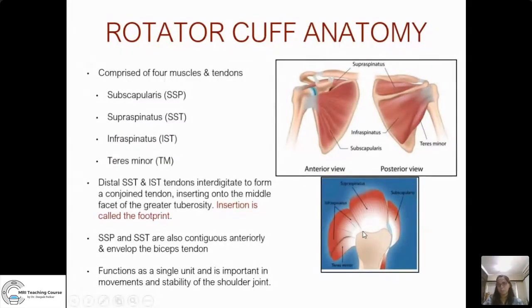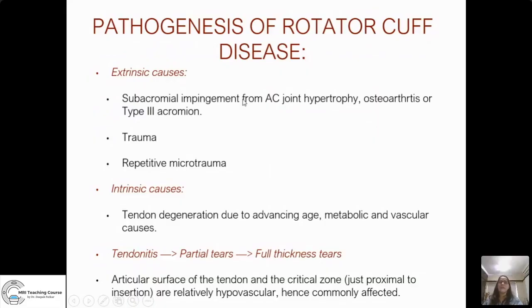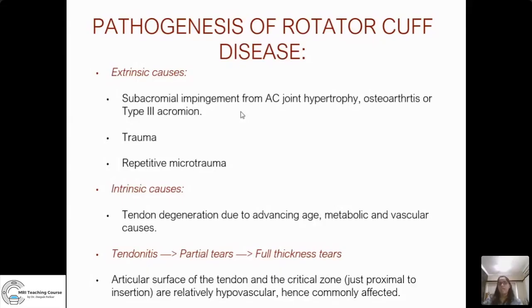This interdigitation is important because when evaluating rotator cuff pathologies and tears, extension from one tendon to another often happens because of it. Functionally, the rotator cuff is considered as one unit helping in the movements and stability of the shoulder joint. Broadly, shoulder pathology is divided into rotator cuff and non-rotator cuff disorders. Rotator cuff pathologies include tendinitis, partial or full thickness tears, impingement, and calcific tendinitis. Extrinsic causes include extrinsic impingement from the acromioclavicular joint — from hypertrophy, osteoarthritis, or structural abnormalities in the acromion, typically a type 3 acromion — and trauma or repetitive microtrauma from overuse.